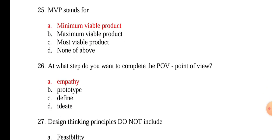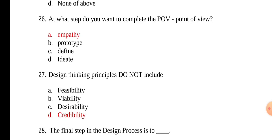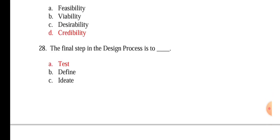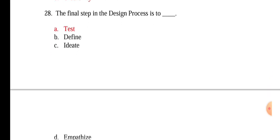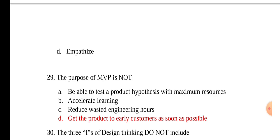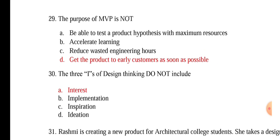At what step do you want to complete the POV, point of view? That is empathy. Design thinking principles do not include credibility. The final step in design process is to test. Define, ideate, empathize are the previous steps.